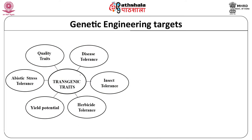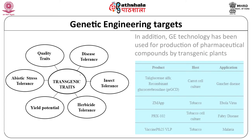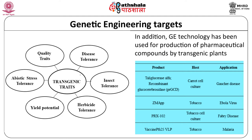Genetic engineering has targeted various traits for improvement, which includes increased resistance to pests and diseases and providing tolerance to abiotic stress. Another important aspect is to increase the intrinsic yield potential of crops by altering plant architecture, manipulating flowering time, or redistribution of photo assimilates to desired sinks. The technology has also made it possible to improve crop quality by increasing its nutritional value or inhibiting toxic constituents. Genetically engineered plants or cells are also being used in the production of useful pharmaceutical compounds which act against human diseases like malaria and Gaucher's disease.